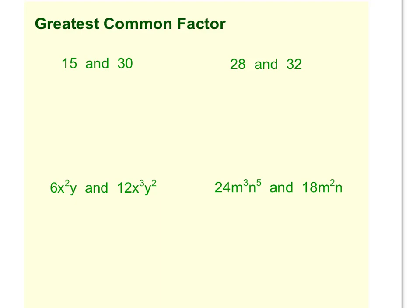We use a greatest common factor all the time when we do our factoring. The greatest common factor is going to be the biggest factor that is common to both numbers or both monomials depending on what you are factoring.